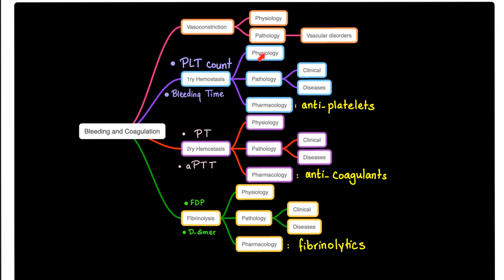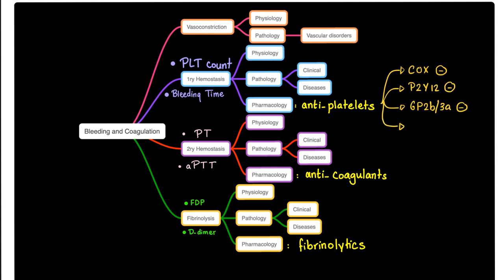Primary hemostasis has physiology, pathology, and pharmacology. The pharmacology includes anti-platelets, including but not limited to aspirin and other NSAIDs. You have the P2Y12 inhibitors such as clopidogrel and prasugrel. You have the GP2B3A inhibitors such as abciximab, tirofiban, and eptifibatide. You also have ticagrelor, and phosphodiesterase 3 inhibitors such as dipyridamole and cilostazol.